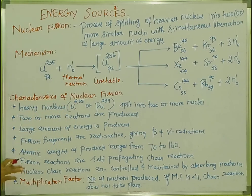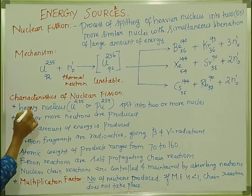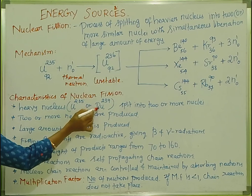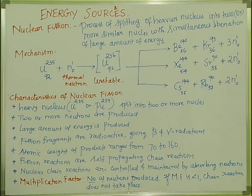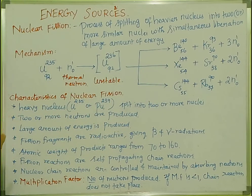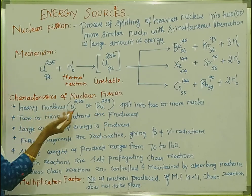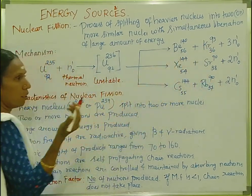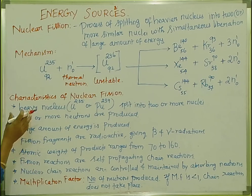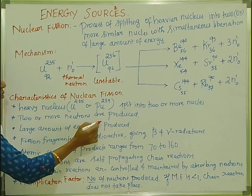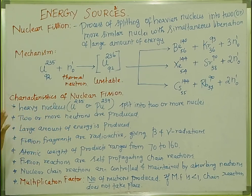Characteristics of nuclear fission reaction. First: a heavy nucleus — that is uranium-235 or plutonium-239 — splits into two or more nuclei. Second: two or more neutrons are produced in the reaction. Third: a large amount of energy is produced in this reaction.